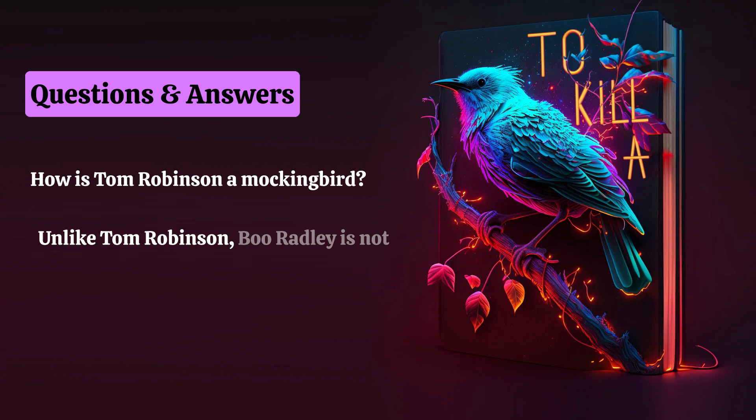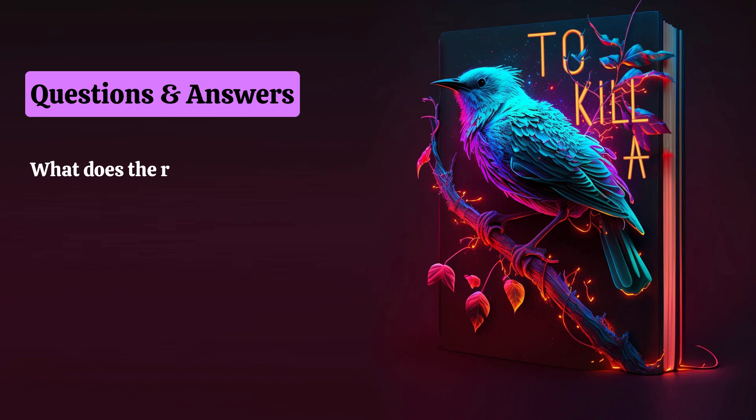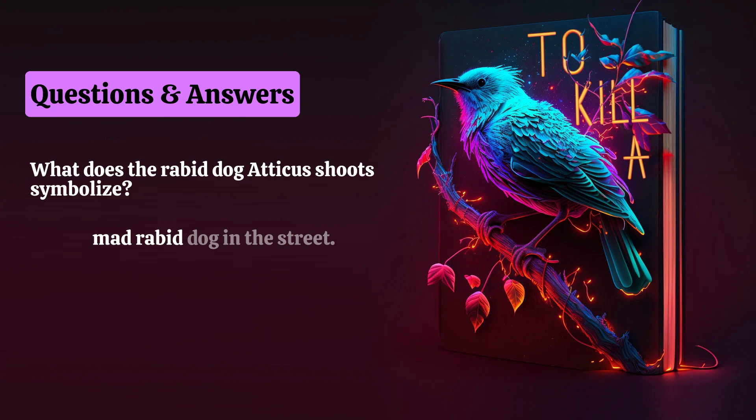What does the rabid dog Atticus shoots symbolize? In Chapter 11, Atticus shoots a mad, rabid dog in the street. This episode serves two important purposes in the novel.